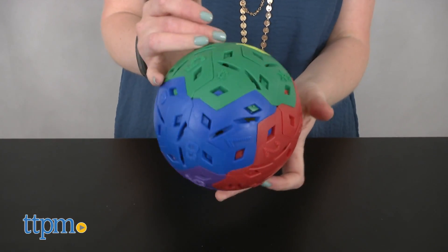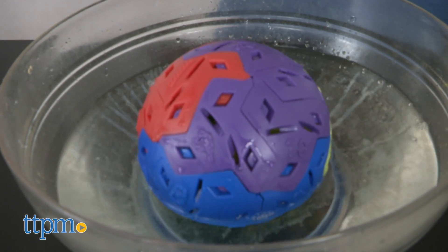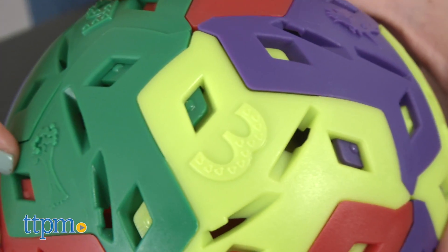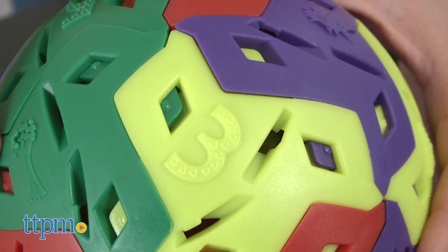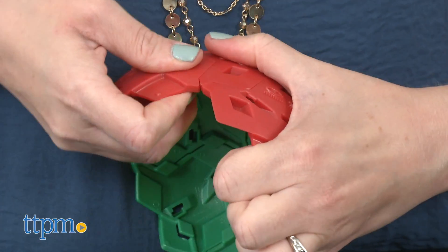We like that this toy doubles as a bath toy, giving little ones more than one place to play with it. And it's also pretty neat that it comes apart so that kids can explore the individual pieces more for specific play with color and number recognition as guided by mom and dad, or just fun stacking and connecting play.